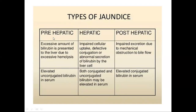Prehepatic jaundice is also called hemolytic jaundice. It may be due to excessive antigen-antibody reactions, or a congenital defect in the structure of RBCs — for example, hereditary spherocytosis, in which RBCs become spherical and very fragile, resulting in excessive hemolysis. It can also occur in sickle-cell hemoglobin, which causes damage to RBCs resulting in excessive unconjugated bilirubin. There is an excessive amount of bilirubin presented to the liver due to excessive hemolysis, leading to increased unconjugated bilirubin in serum.